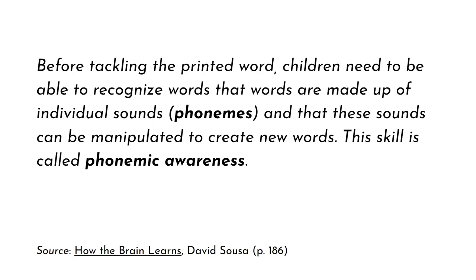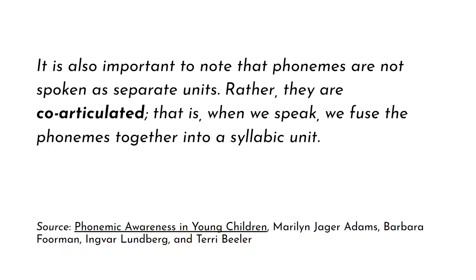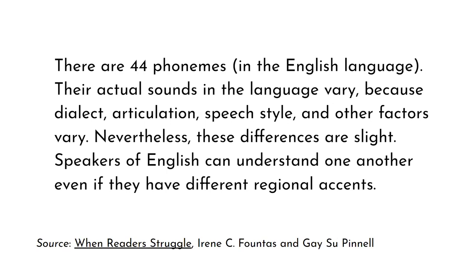According to the book How the Brain Works, neuroscience suggests that children need to possess phonemic awareness before tackling the printed word. Acquiring phonemic awareness is often difficult for children because phonemes are co-articulated—meaning when spoken, they are fused with other phonemes in syllabic units and not always easy to decipher. There are 44 phonemes in the English language. Their actual sounds vary because dialect, articulation, speech style, and other factors vary, though these differences are slight, and speakers of English can understand one another even with different regional accents.